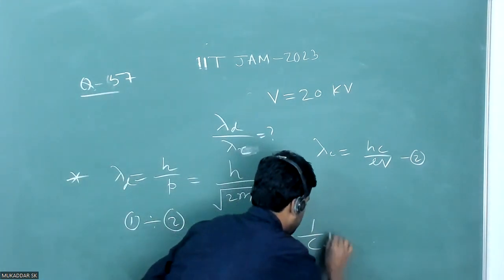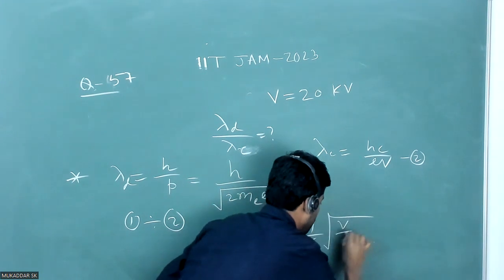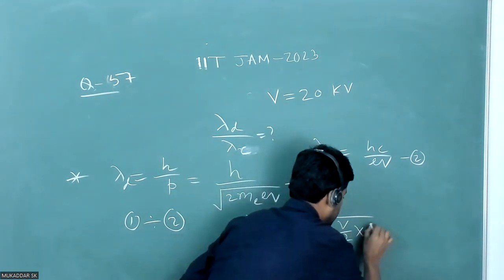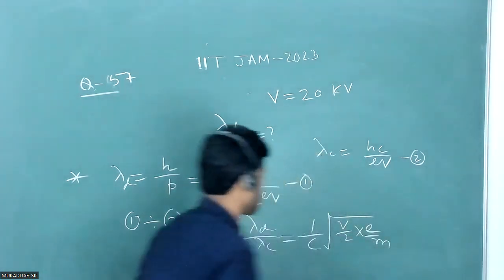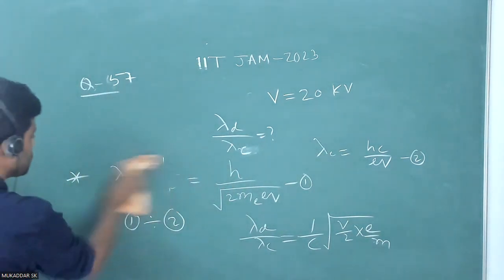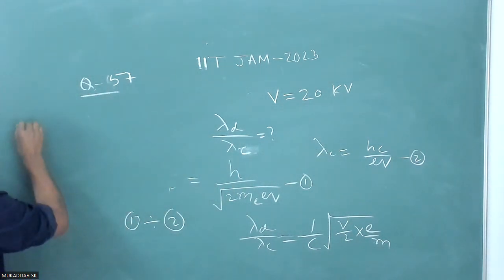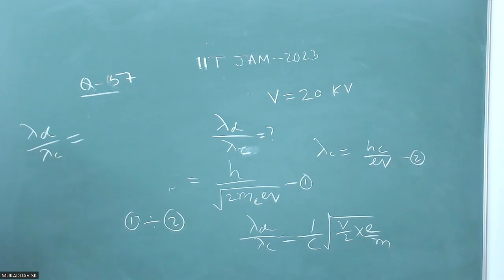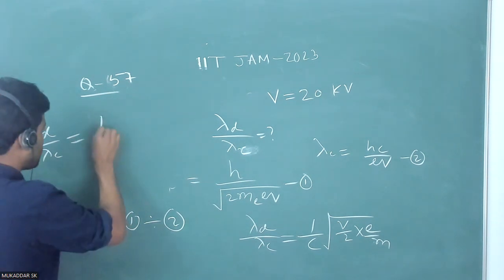That will be 1 by c times square root of V by 2me. So lambda d by lambda x will be 1 by c times the square root term.